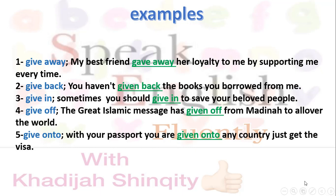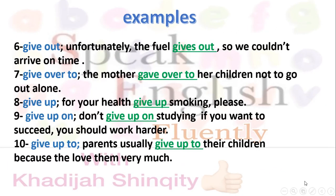Number four — give off: The great Islamic message has given off from Medina to all over the world — it spread and radiated from Medina. Number five — given to: With your passport you are given access to any country, just get the visa. Number six — give out: Unfortunately the fuel gives out, so we couldn't arrive on time. Number seven — give over to: The mother gave over to her children not to go out alone, never ever.